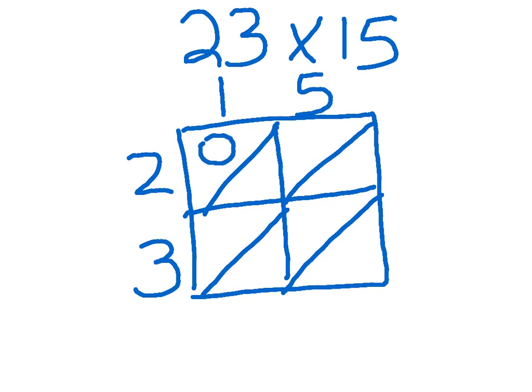For example, 2 times 1 is 2: 0 tens, 2 ones. 2 times 5 is 10: 1 ten, 0 ones.